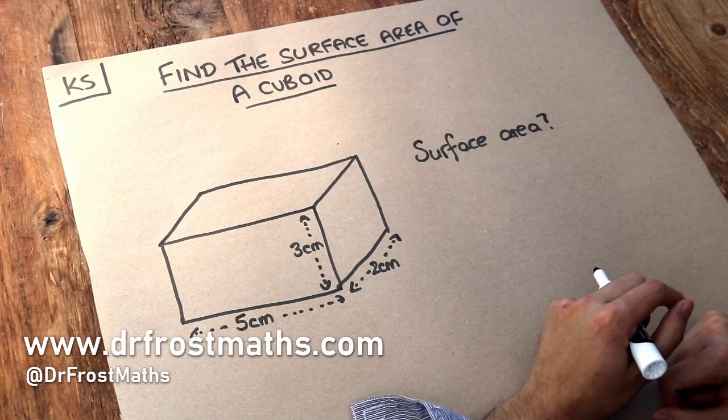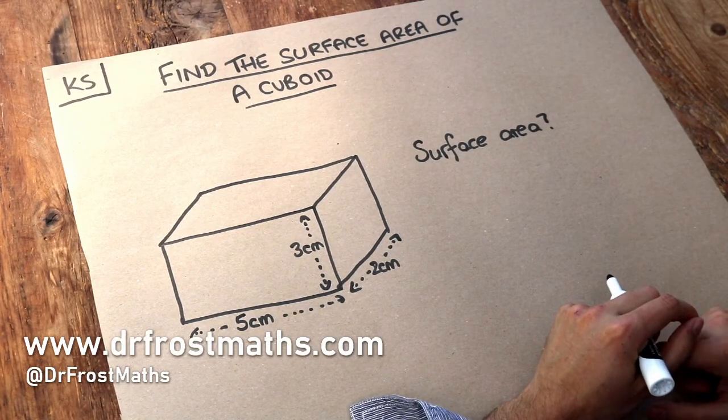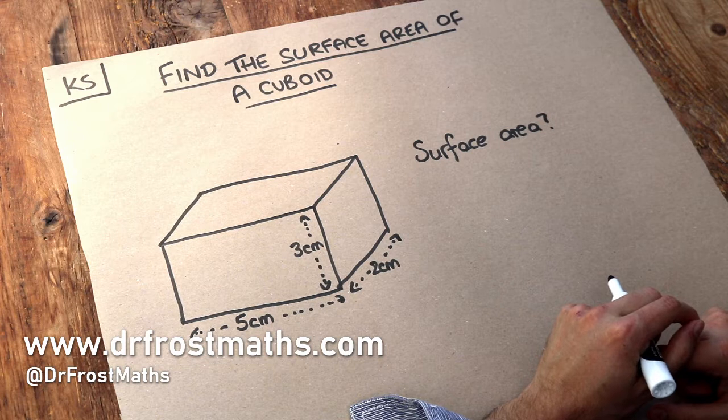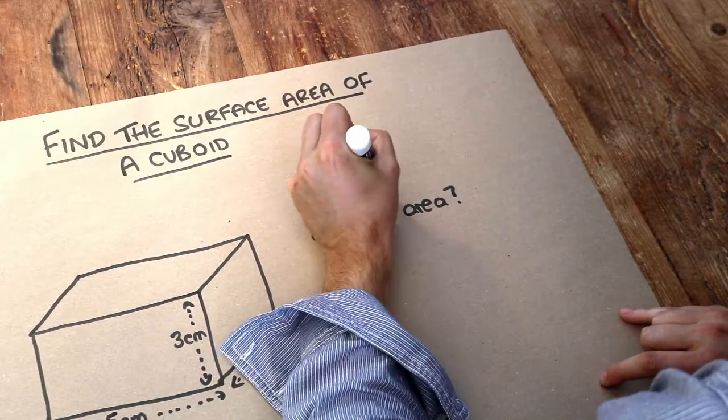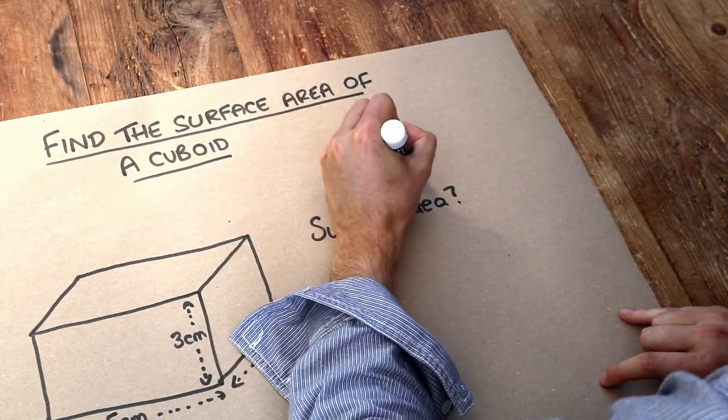Hello and welcome to this Dr. Ross Maths key skill video on finding the surface area of a cuboid. Now the surface area of a 3D solid is just the total area of all the faces.